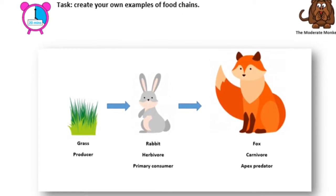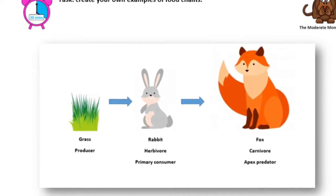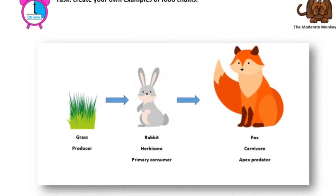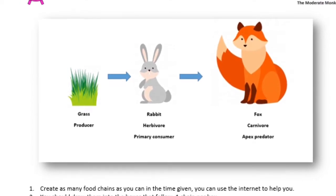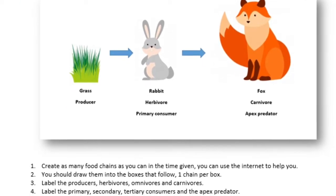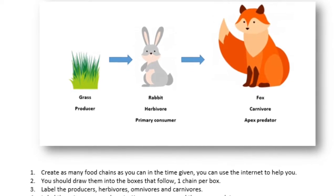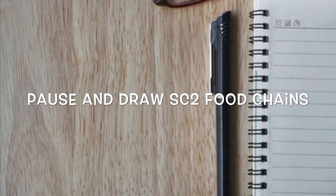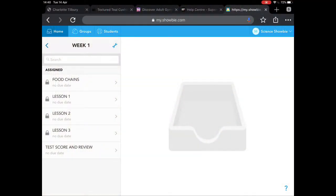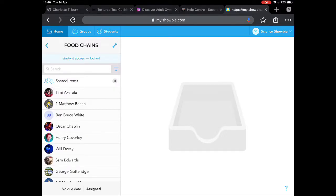On to the next task of SC2, which is to create your own examples of food chains. Read the instructions carefully and look carefully at the example food chain given before you start this task. You should spend roughly 20 to 30 minutes drawing food chains. They should be drawn in the boxes provided, and make sure you have all of the labels requested. You'll then upload your food chains into the food chains assignment in Showbie.